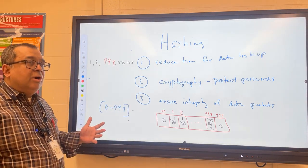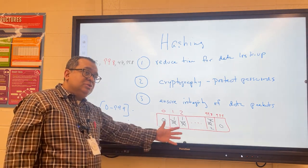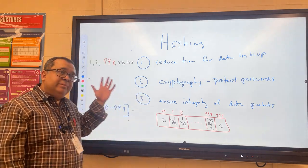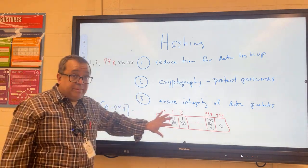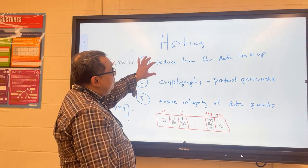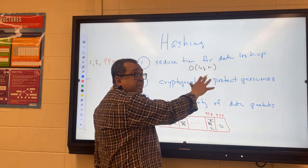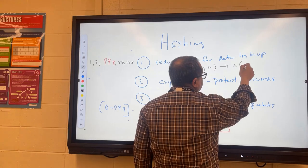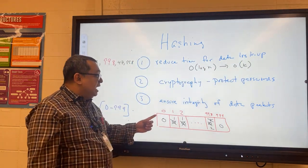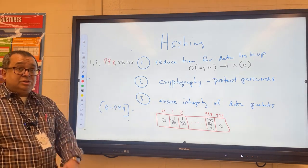Now ask yourself: if I need to know whether I have a 998, or even better, how many 998s I have, what would be the lookup speed of this structure? This array keeps track of how many of each number I have. There was some processing needed to set up the array, but on an ongoing basis the lookup speed is O(k) — essentially O(1). This changes O(log n) from our binary search tree into O(1), which is even better. The data do need to be well-behaved for this — for example, it wouldn't work with decimal numbers — but we'll talk about how to handle those situations.